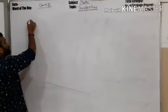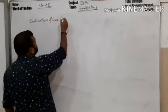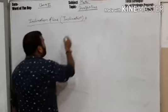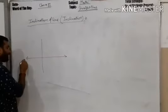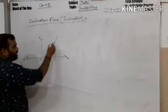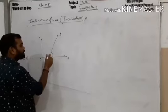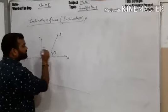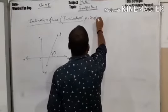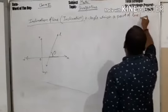The first new term is the inclination of a line. Suppose this is the coordinate axis — x and y — and suppose there is a line. Inclination means the angle which this line, above the x-axis, makes with the positive direction of the x-axis.